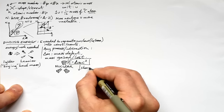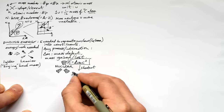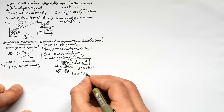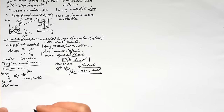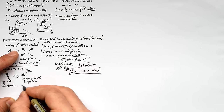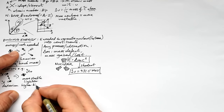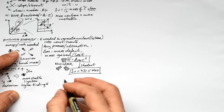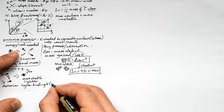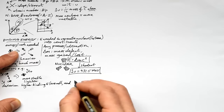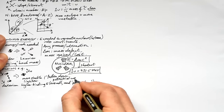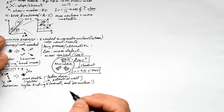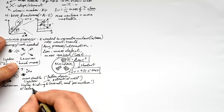We can use kilograms times c² to get joules, or use the shortcut: one U is equivalent to 931.5 MeV of energy. Fusion is when two light nuclei — like deuterium — collide and fuse to make one nucleus such as helium. They need a lot of energy to overcome electrostatic repulsion and get within range of the strong nuclear force. The resulting helium nucleus is more stable, lighter, with the lost mass converted into energy and a higher binding energy per nucleon.